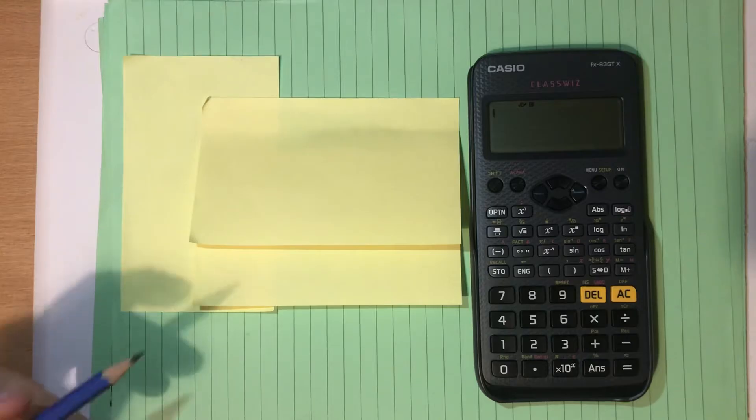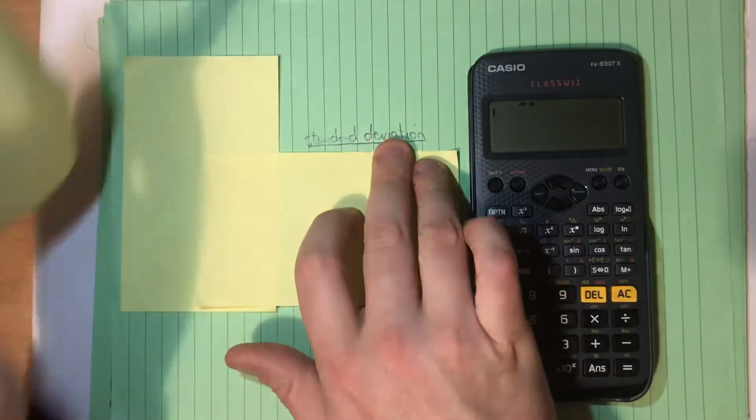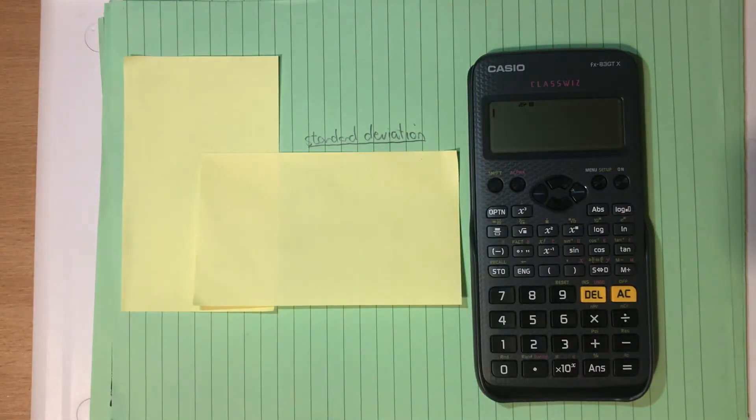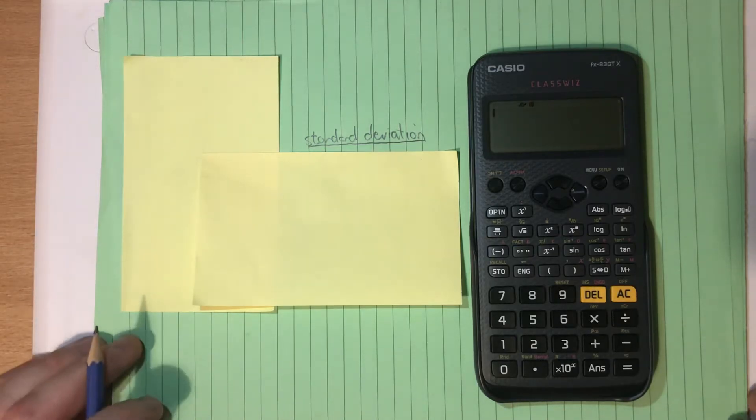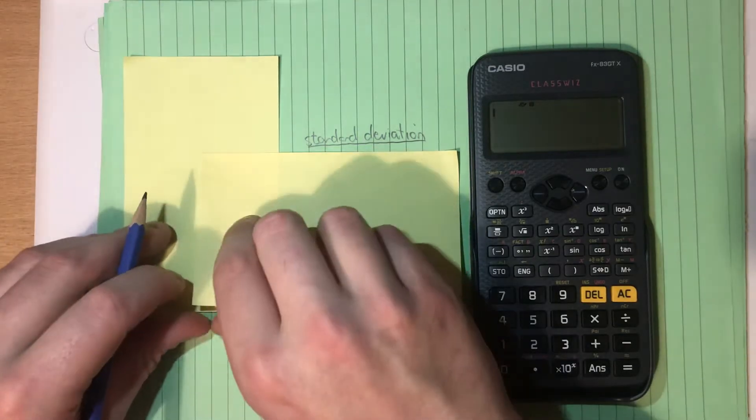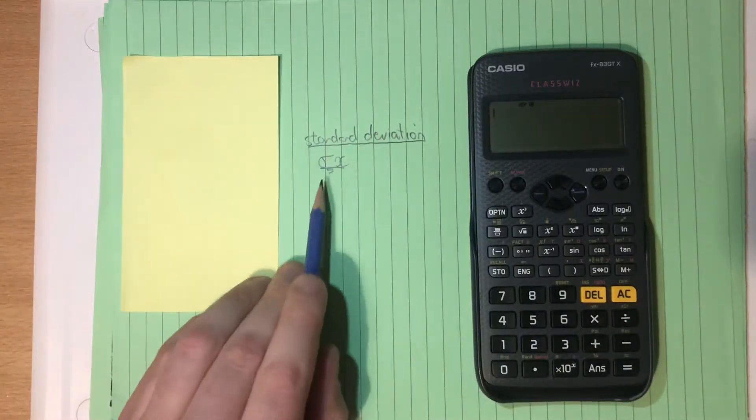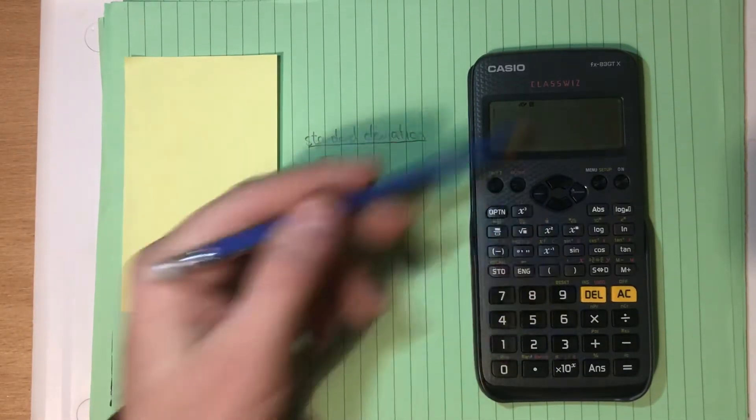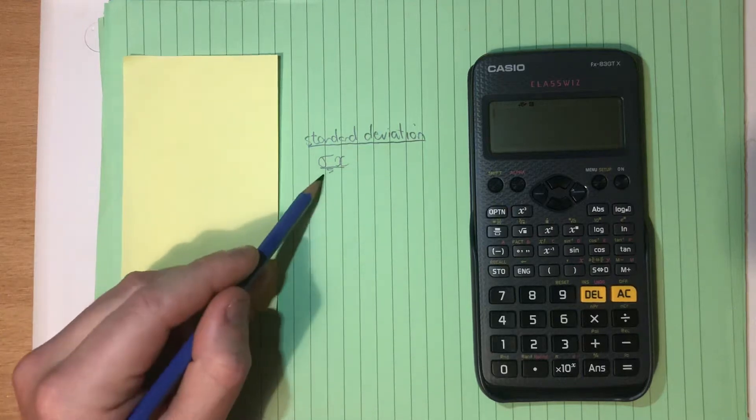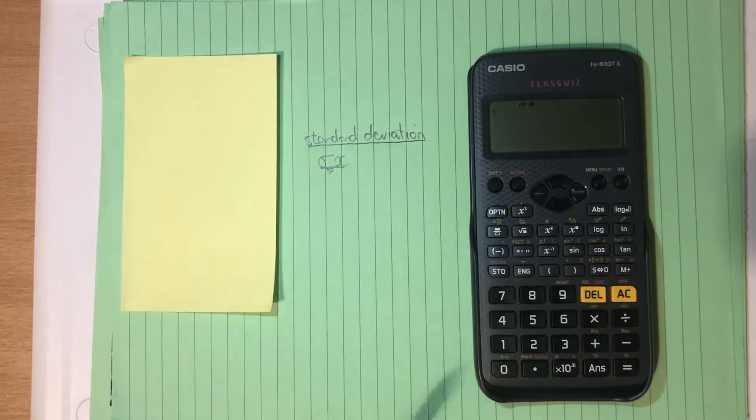So in particular, we're going to be taking a look at how to find standard deviation of a list of numbers. But the big thing that we need to realize is that the symbol for standard deviation is going to be this guy here, this Sigma X. So somewhere in this calculator, a method for finding standard deviation is located.